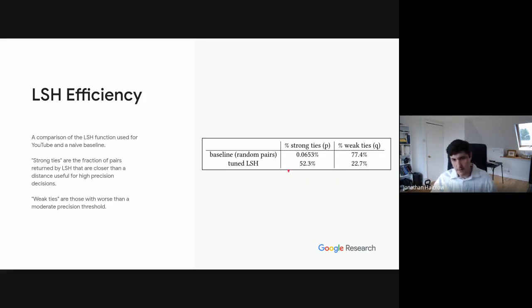On the other hand, comparing to a naive random baseline, almost none of the pairs that you would find with this approach are strong ties, less than one percent. And the vast majority of them are weak ties. So using random pairs, it would take many more comparisons to find a graph of the same quality that we get from using LSH.